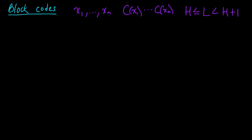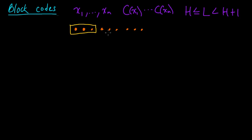So one way to address this is using block codes. I'm going to denote x1 to xn by a sequence of dots here, say nine little dots. The idea behind block coding is that maybe we can take that up to one bit of inefficiency and spread it out over a few different source symbols — say in this case, maybe three source symbols — so we could have block sizes of length three. You would then have a sequence of blocks, where for each block you have a code word rather than having a code word for each source symbol.